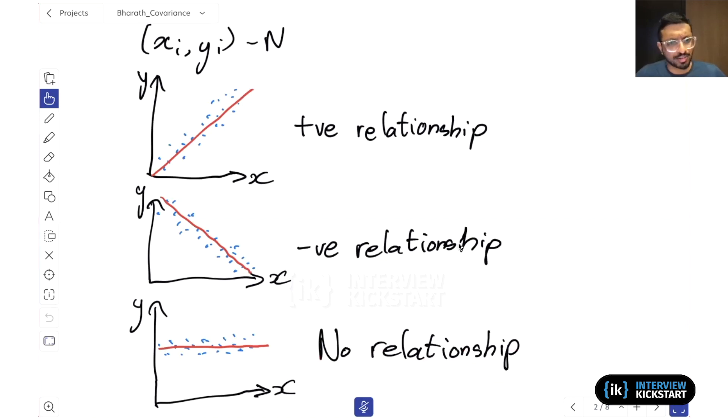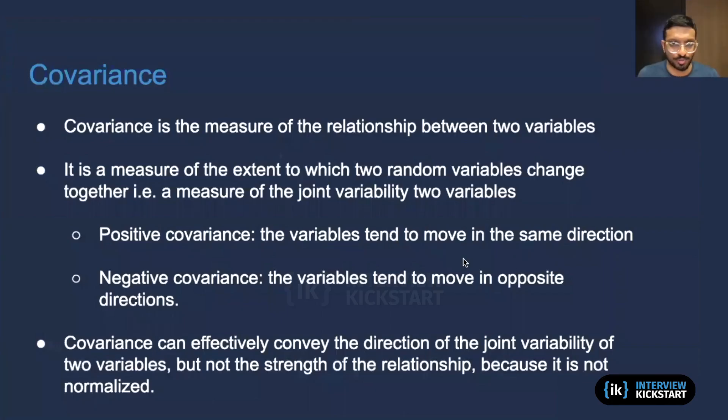So this is exactly kind of what we want to get from the concept of covariance. We want a quantity that will basically tell us, are these two variables related? Do they vary positively? Do they vary negatively? Or are they kind of not related to each other? So with that in mind, let's step into the actual definition of covariance.